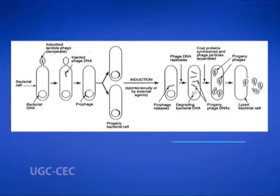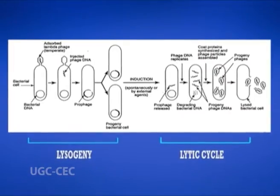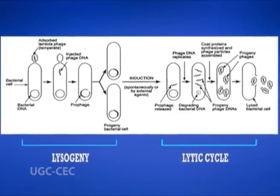The lytic and lysogeny cycles are two different methods of viral replication. Under certain conditions they are interchangeable, or replication can involve both methods in separate phases. In both types of replication, the virus attaches itself to the outer cell wall and releases an enzyme that weakens the cell wall. Depending on whether it is a DNA virus or an RNA virus, the virus injects its double-stranded DNA or single-stranded RNA into the cell.